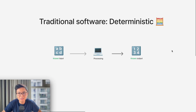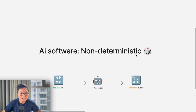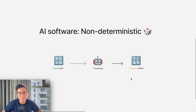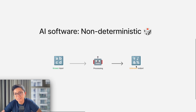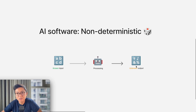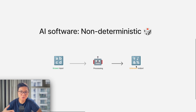Traditional computer software is deterministic, meaning that with one specific input, we can determine with 100% accuracy the output of that program. On the other hand, AI software — especially generative AI based on large language models — is not deterministic. So even if the software is run with the same input, we might get a different output at different times. If you have worked on AI development before, you have probably experienced this already, where a conversational AI agent gives inconsistent responses.